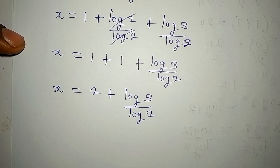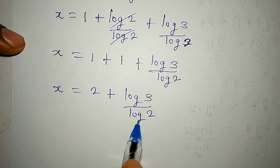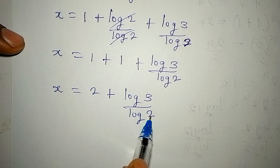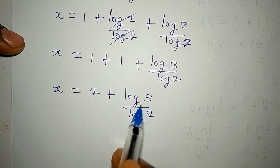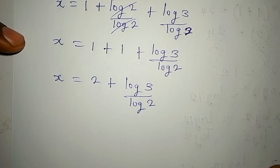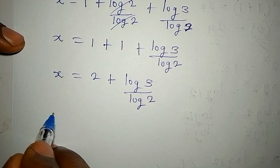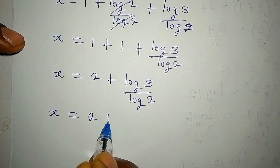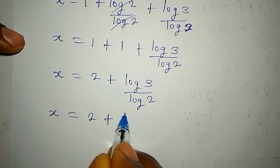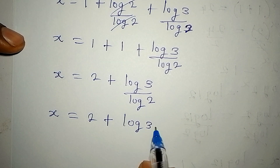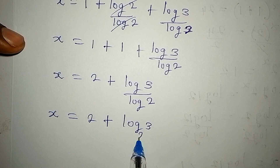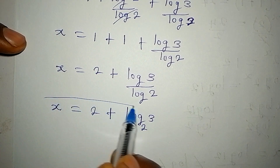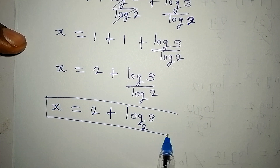Now remember that we can apply the change of base rule to log 3 over log 2, where 2 becomes the base of log 3. So x is equal to 2 plus log 3 to base 2. This is the value of x.